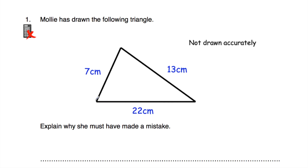If we had a 22cm line going along here and we drew a 7cm line on one side and a 13cm line on the other, those two lines wouldn't actually meet each other — they wouldn't reach. Because 7 plus 13 is 20, which is less than the length of the base of 22cm, they wouldn't reach each other. Whenever we add these two sides together, it needs to be greater than 22cm.